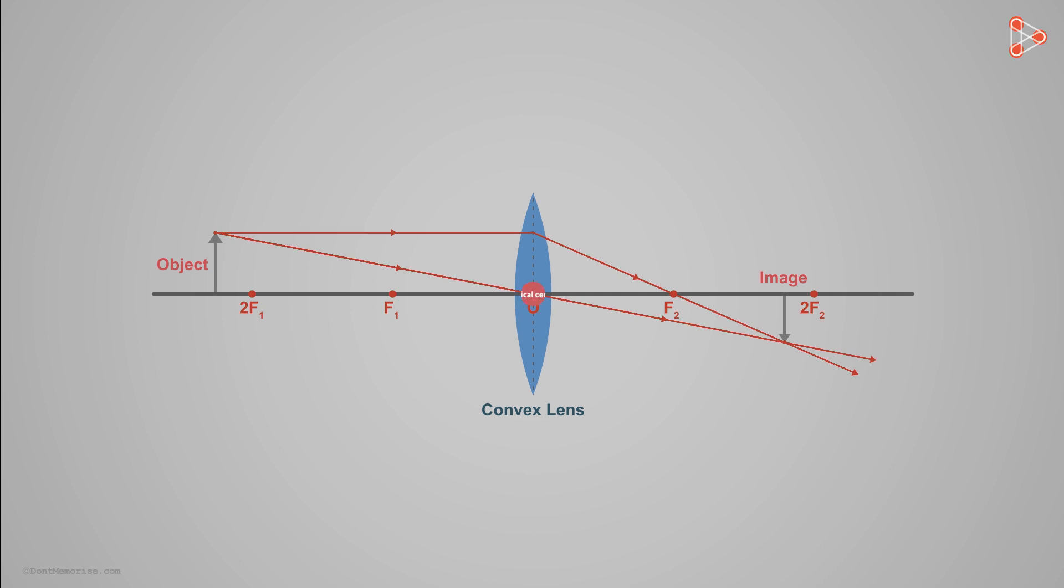The concept is similar for lenses. For our lens, we assume the optical centre to be the origin. So, the first convention we follow is that we always keep our object to the left of the origin or the optical centre.